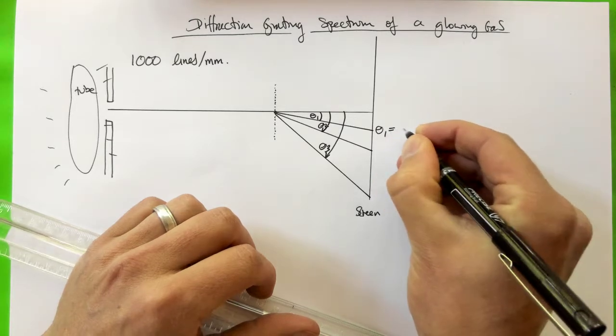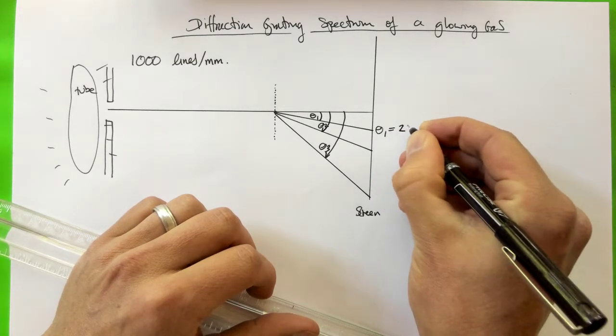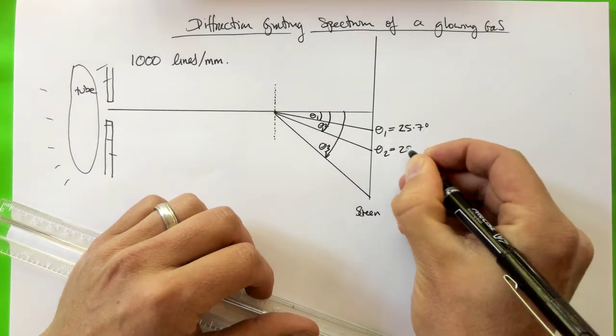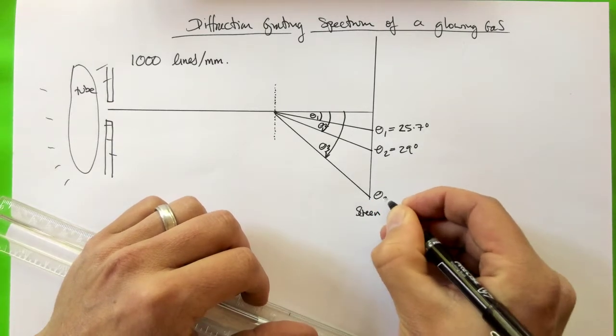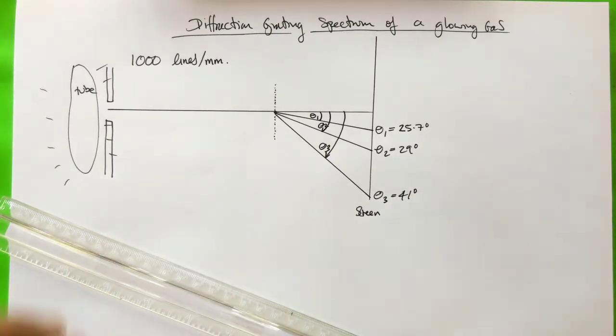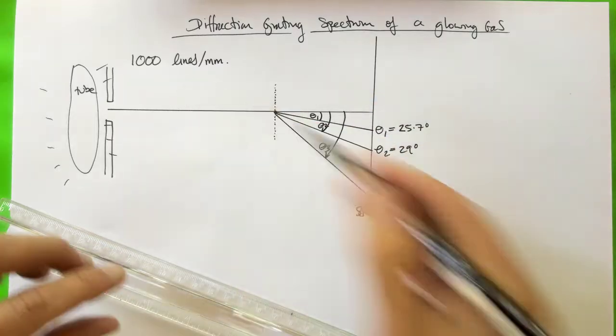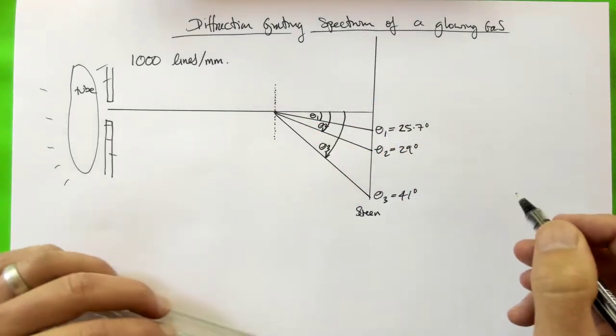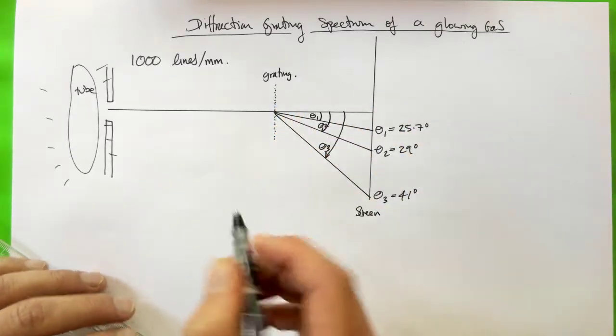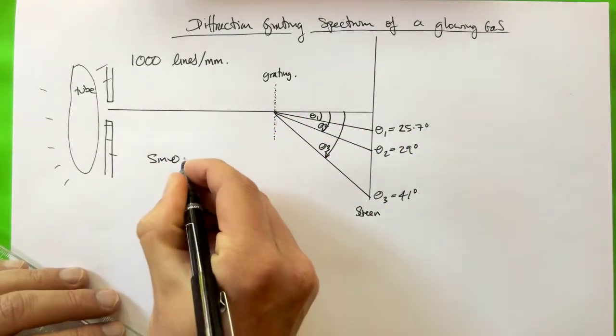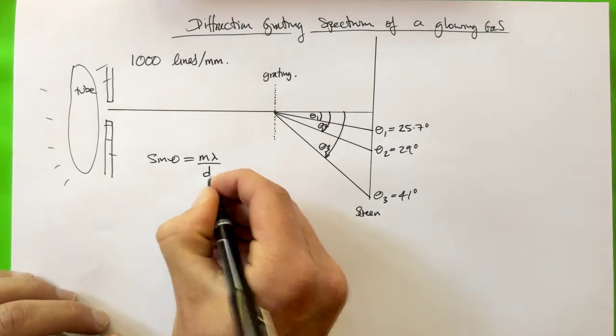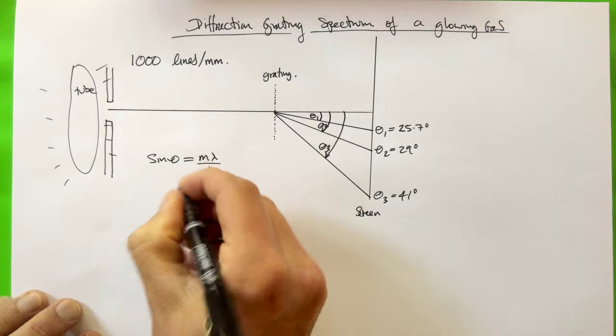So theta 1 equals 25.7 degrees, theta 2 is 29 degrees, and theta 3 equals 41 degrees. So we're going to use our diffraction equation to figure out, for each of these angles, what the wavelength of light was that led to that diffraction. So I'll just label here, this is the grating. So d sine theta equals m lambda over d, where d is the spacing.